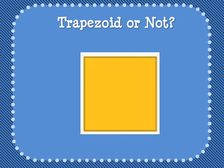And you're right, and you're wrong too. It is a square. It's also a trapezoid. It's a trapezoid because this side is parallel to this side, so it has at least one pair of parallel sides.